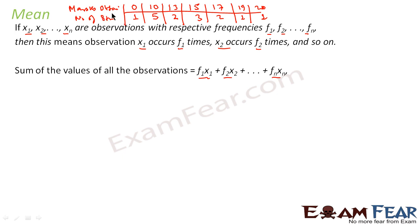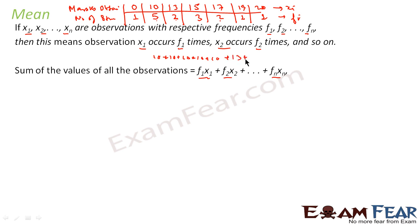Here, marks obtained are the x_i values and number of students are the f_i frequencies. If you want to find the sum of all marks obtained by all students, it will be: 0×1 + 10×5 + 13×2 + 15×3 + 17×2 + 19×1 + 20×1. This is because 10 marks obtained by 5 people means adding 10 five times: 10+10+10+10+10; 13 by 2 people: 13+13; 15 by 3: 15+15+15; and so on.